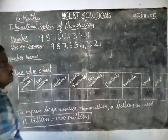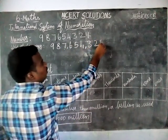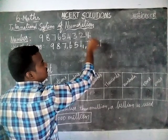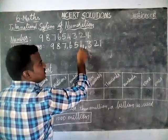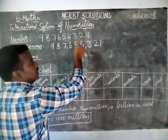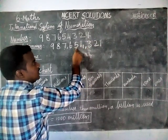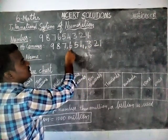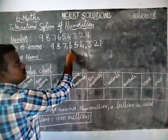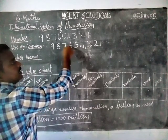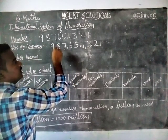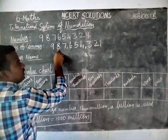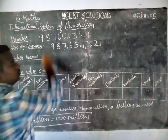How to read this? The place values are: ones, tens, hundreds — then thousands, ten thousands — then hundred thousands, then million, ten million, hundred million.